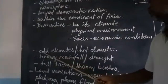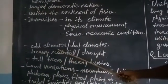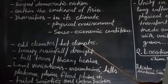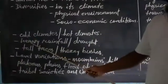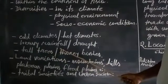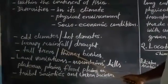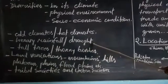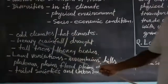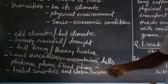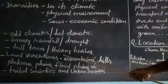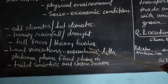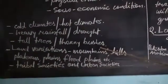When we talk about diversities in climate, we see in India there are cold climates in the northern part while hot climate in certain parts like Rajasthan. There are heavy rainfalls that create floods in certain regions of India, while others have drought-type conditions with scanty rainfall. In some regions there are tall trees with broad leaves, while in others there are thorn bushes, especially in areas with scanty rainfall.